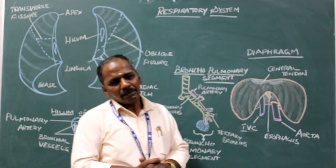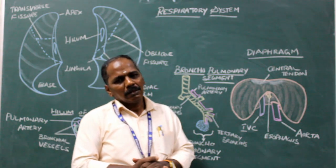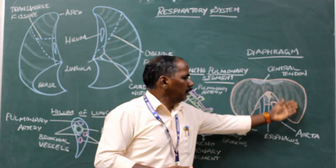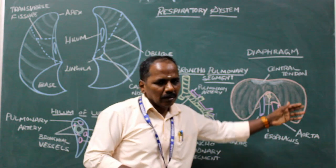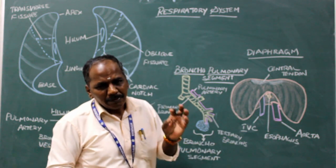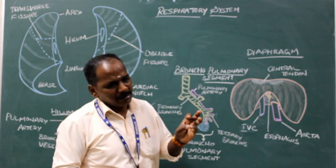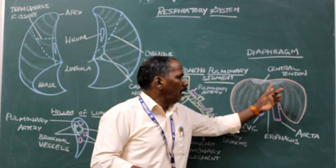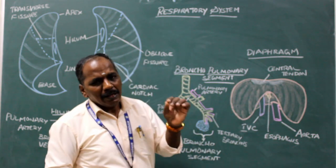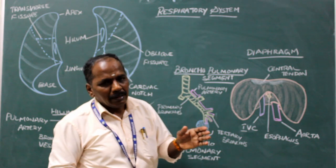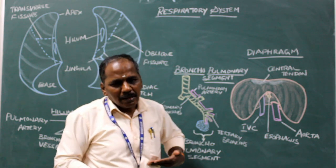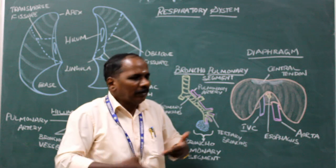Diaphragm. It is a dome-shaped musculo-aponeurotic organ — made up of muscle and aponeurosis — that intervenes between the thorax and the abdomen.